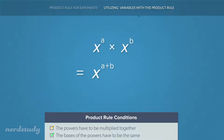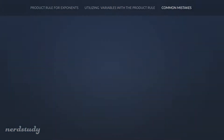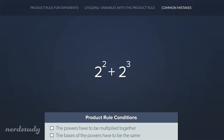The product rule is pretty simple, but there are situations where people tend to make common mistakes. When you're being asked to simplify this over here, it might be very tempting to use the product rule. But we have to remember that there are two conditions that absolutely must be met. Condition number one was that the two powers must be multiplied together, and right off the bat these two powers are not being multiplied together — they're being added together. So even though the second condition does apply, as you can see the two bases are the same, you cannot use the product rule in this situation.